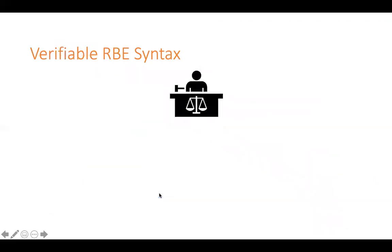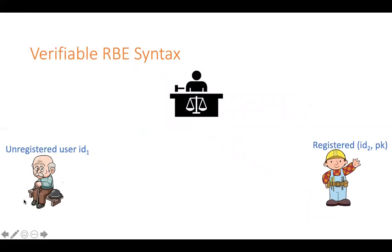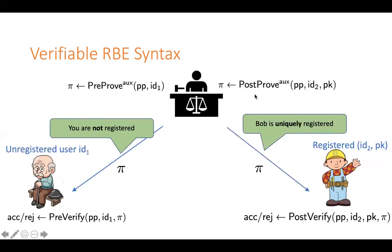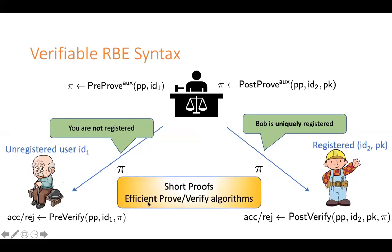Let's add the verifiability property. Here we have two types of users: Bob is a registered user, whereas this old man is a not-yet-registered user. The authority can send the old man a proof that he is not registered — the authority generates the proof using a pre-proof algorithm and the old man verifies using a pre-verify algorithm. The authority can also send a proof to Bob that he is uniquely registered — generated using post-proof, verified by Bob using post-verify. We use 'pre' because the user is not registered yet, and 'post' because the user is already registered. The proofs have to be short and all algorithms have to be efficient, with all parameters at most polylogarithmic in the number of users.